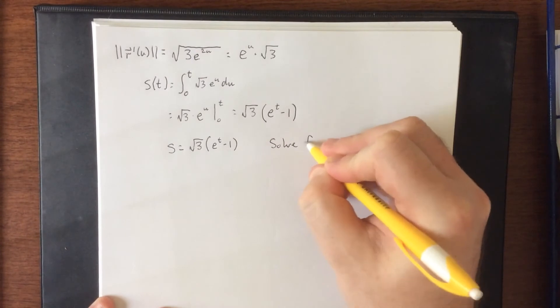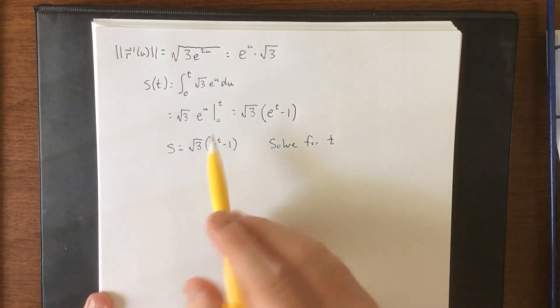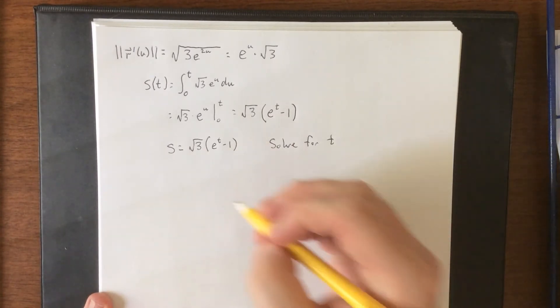The idea is we are going to solve this for t. Now there are a number of ways that I could be solving this for t. I'm going to go with the simplest possible route by saying let's divide by the square root of three, then add one, then take a natural log.